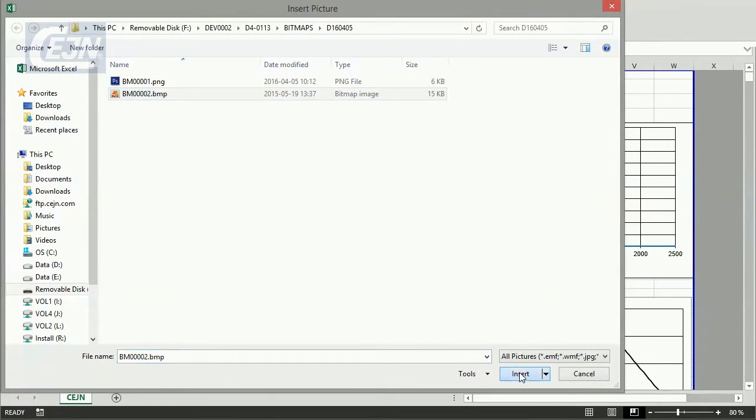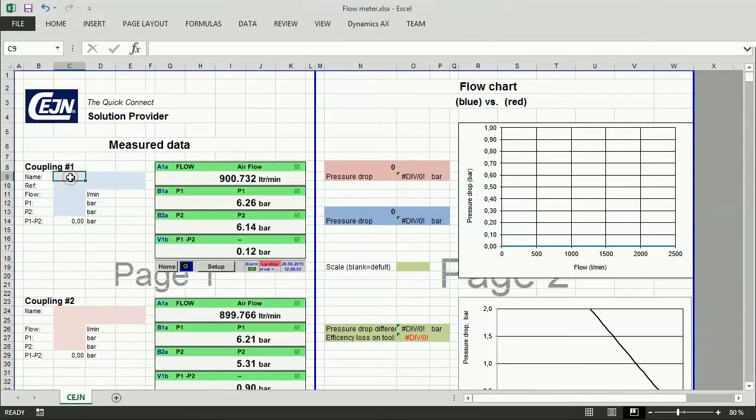Once you've inserted the pictures, you need to key in the name of the coupling. In this case, eSafe 320. Then key in the flow and the P1 and P2 figures. The Excel file will calculate the difference between the P1 and P2 results.